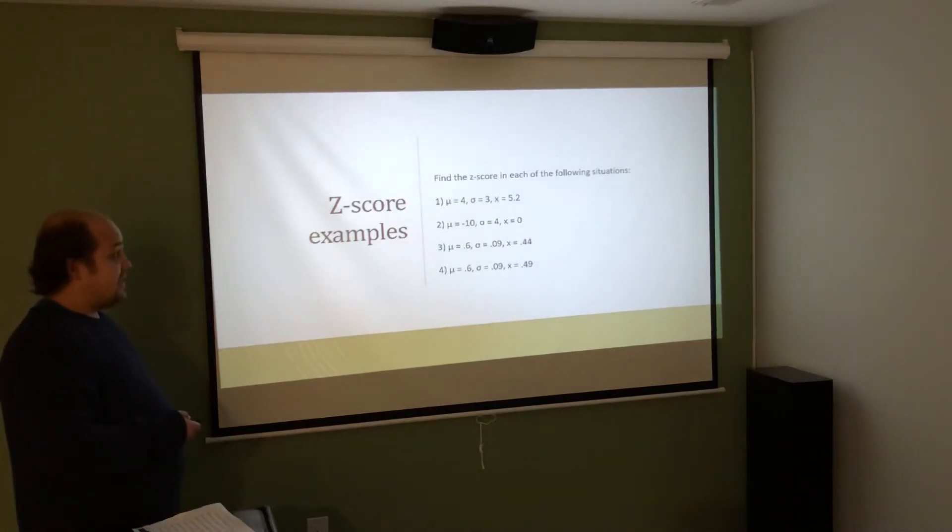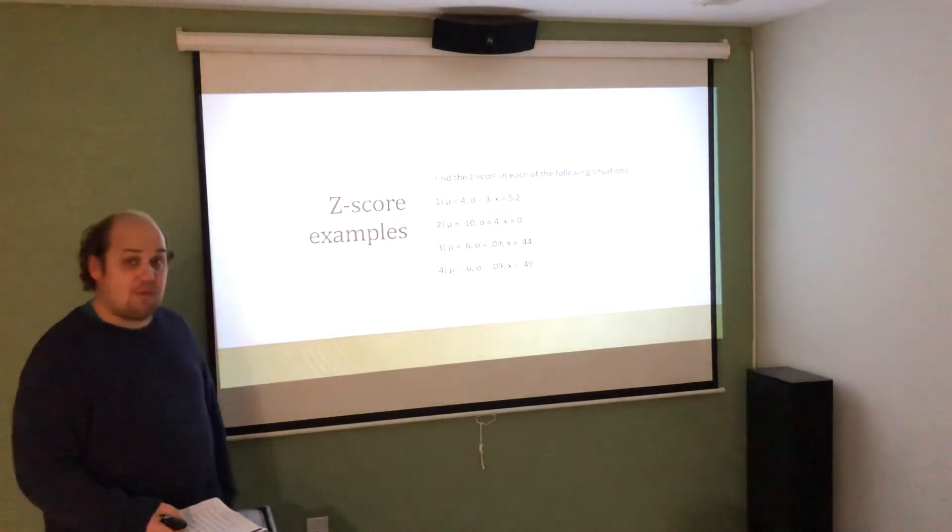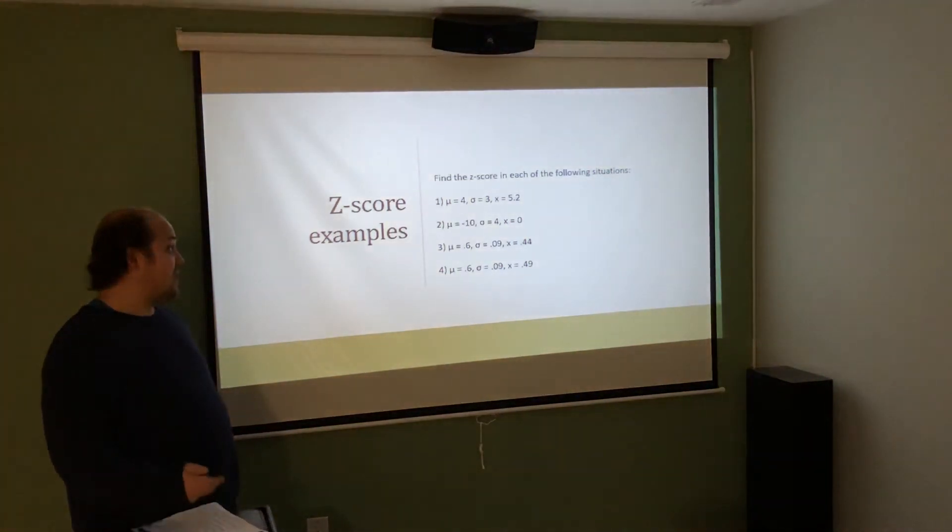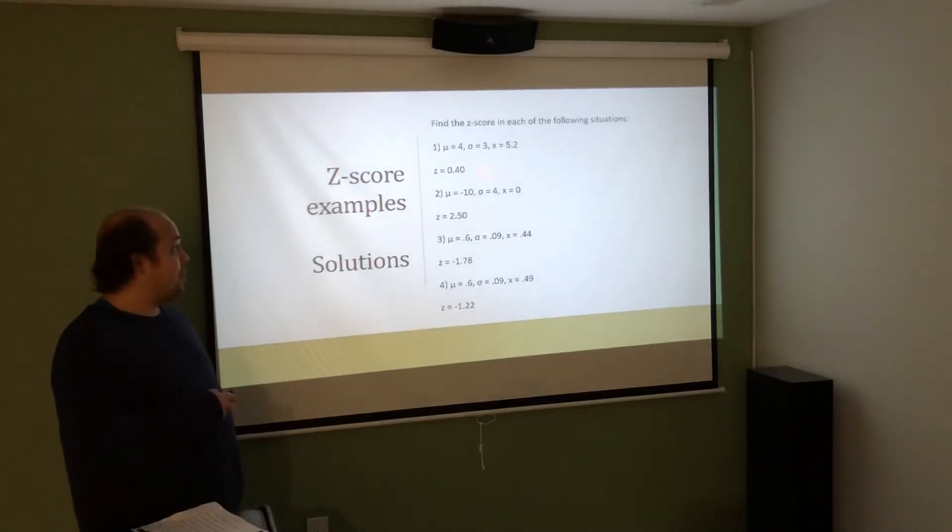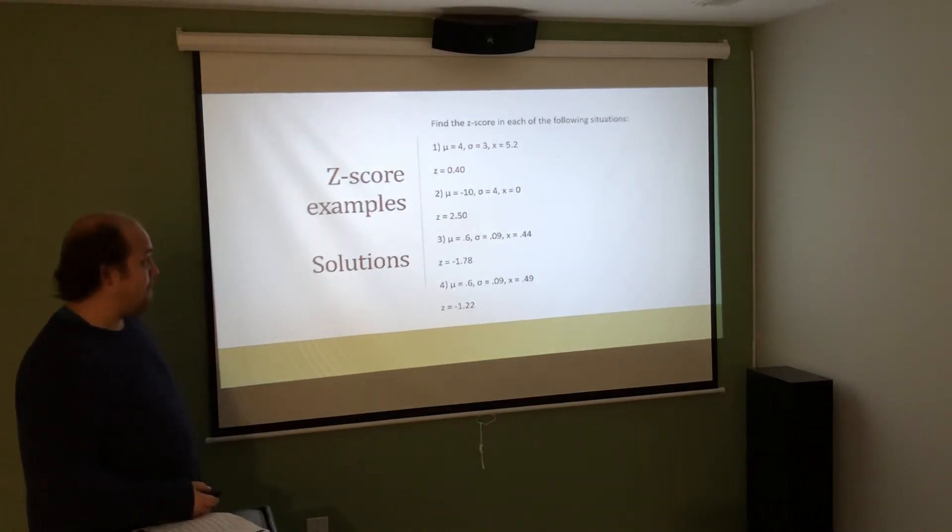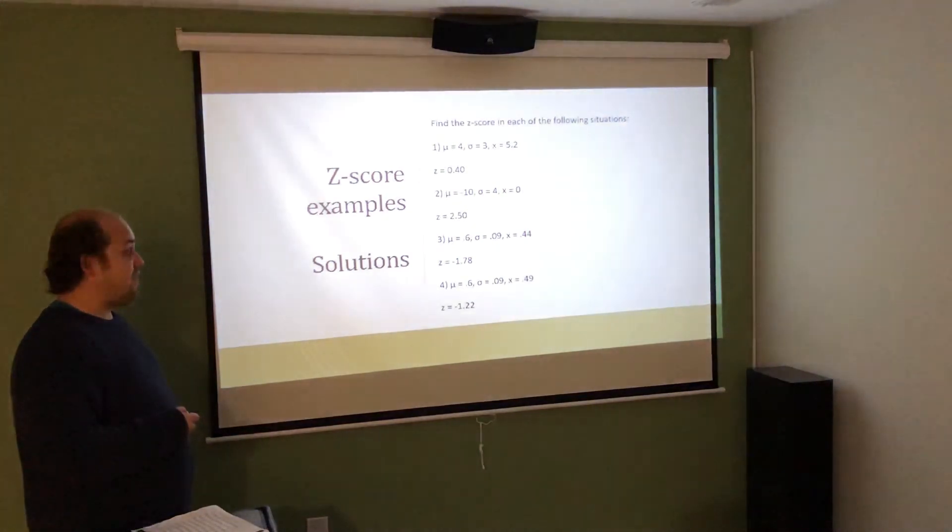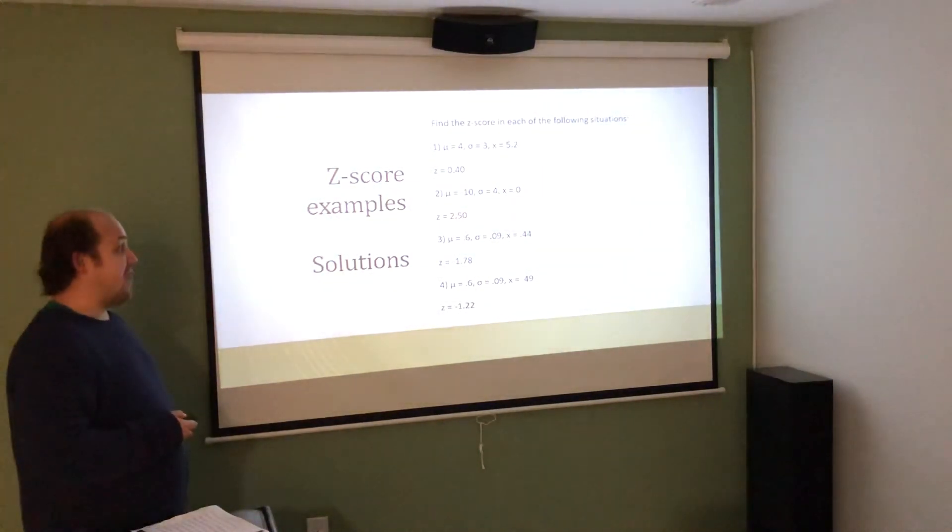Here, we're going to find the Z score for each of these situations. Again, I recommend you try it on your own. Pause the video, and then when we come back, I'll go over the answers. So, in problem 1, it would have been 5.2 minus 4 is 1.2, divided by 3 is a Z score of 0.40. For number 2, I would have done 0 minus a negative 10. Minus a negative 10 would be positive 10. When I then divide by the standard deviation of 4, I get a Z score of 2.50.